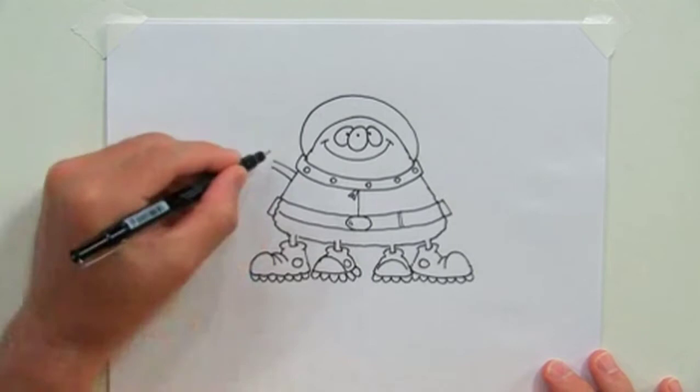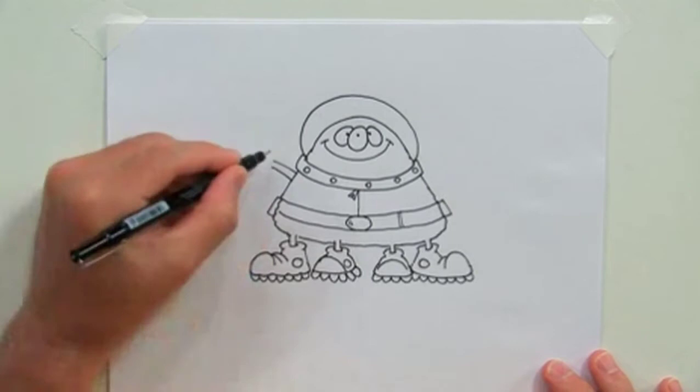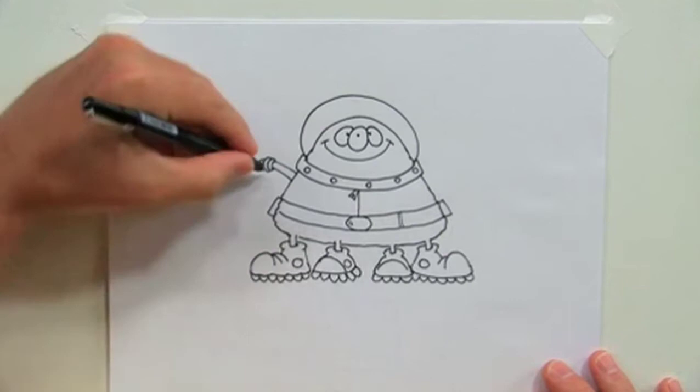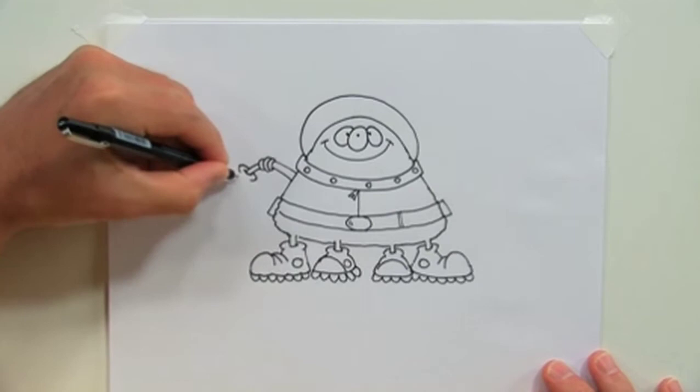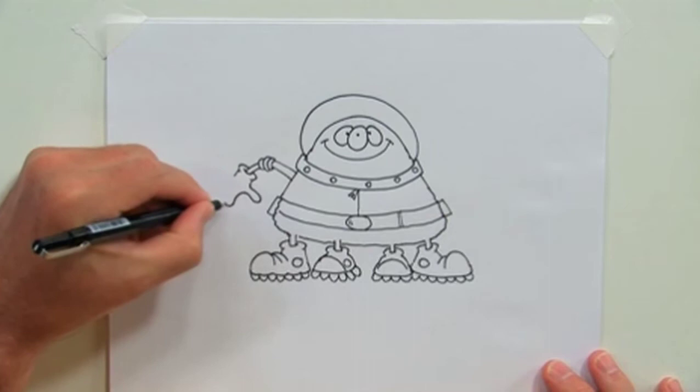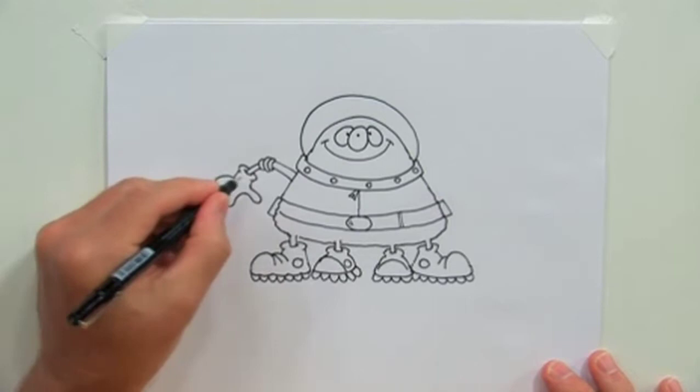Give him some arms. A little elbow joint there. And he's got some space gloves on. Let's give him a whole bunch of little fingers there. Guy has three fingers. And let's make it look like those are space gloves.